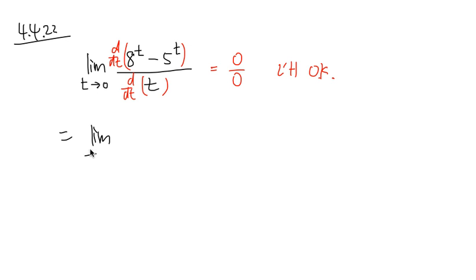This is still the limit when t is approaching 0. Derivative of 8 to the t is just 8 to the t. This is exponential function. You first copy down 8 to the t, and you multiply by ln of the base, which is ln 8. Minus derivative of 5 to the t is just 5 to the t, and you multiply by ln 5.